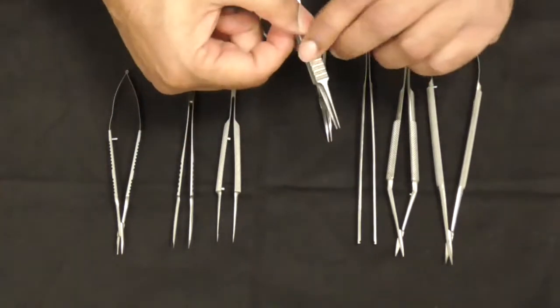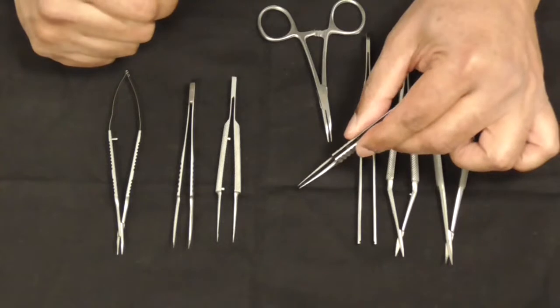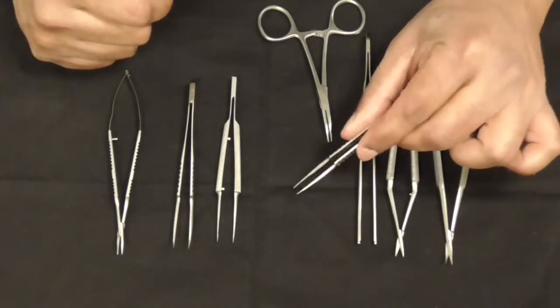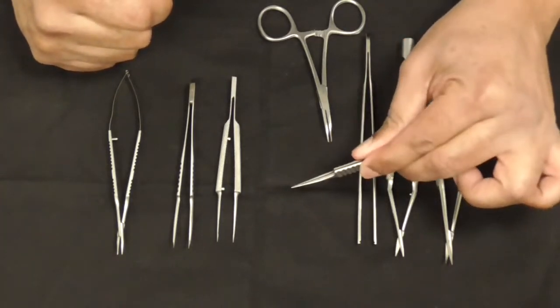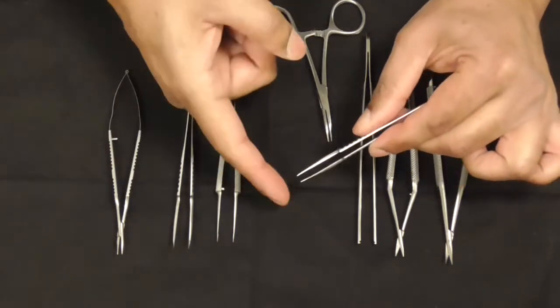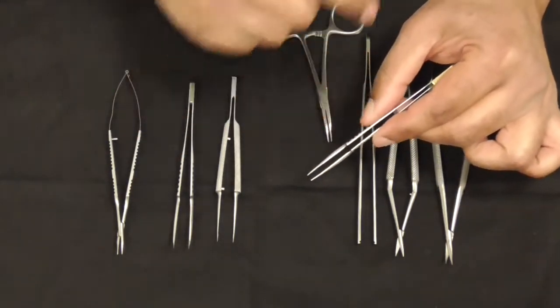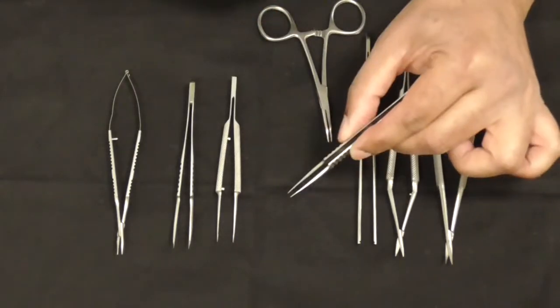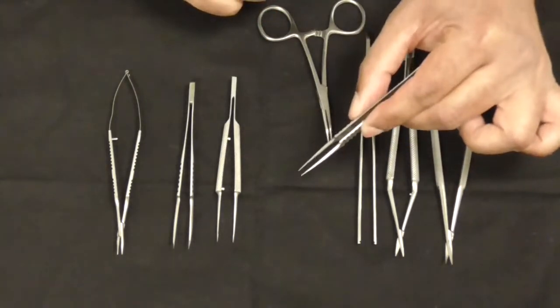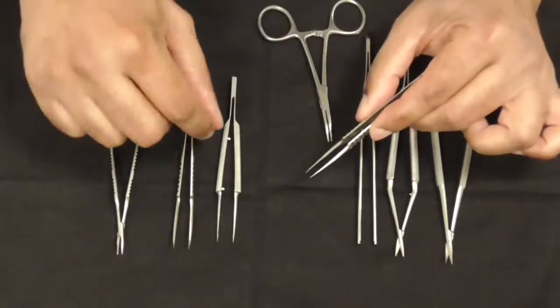Then we've got the 5s, which are the jeweler's number 5 forceps. They're straight and a bit sharp on the ends. Because they're sharp, you cannot put them into a vessel because you'll damage the intima. Never, ever put them into a vessel.